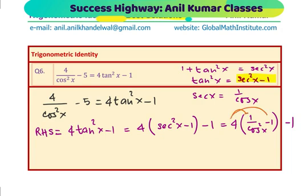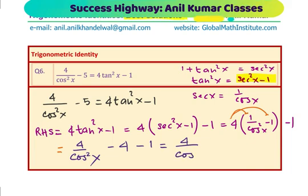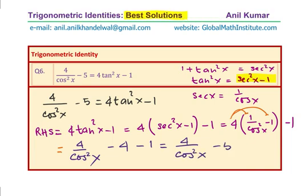Now you can see the result. Let's apply the distributive property. Multiplying by 4, we get 4 over cos square x minus 1, and there is already minus 1 outside. So minus 1 times 4 is minus 4. We get 4 over cos square x minus 5, which is the left hand side.